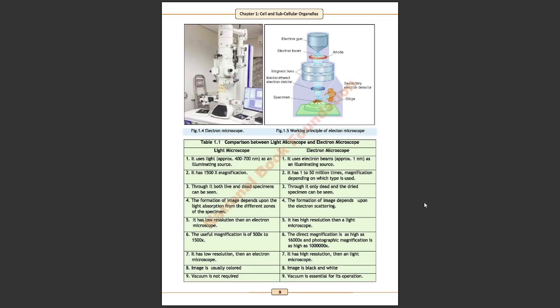Here you can see in figure 1.4 an electron microscope and in figure 1.5 you can see working principle of electron microscope. First of all we have an electron gun where there is a generation of electron beam, then our next stage is a specimen.